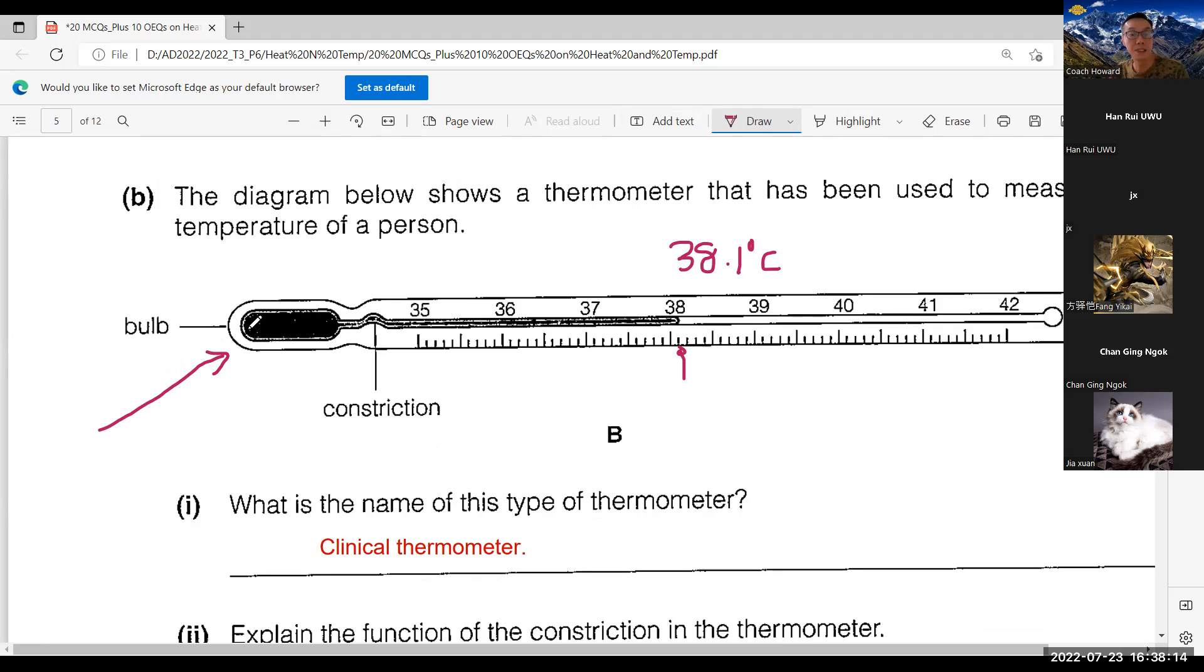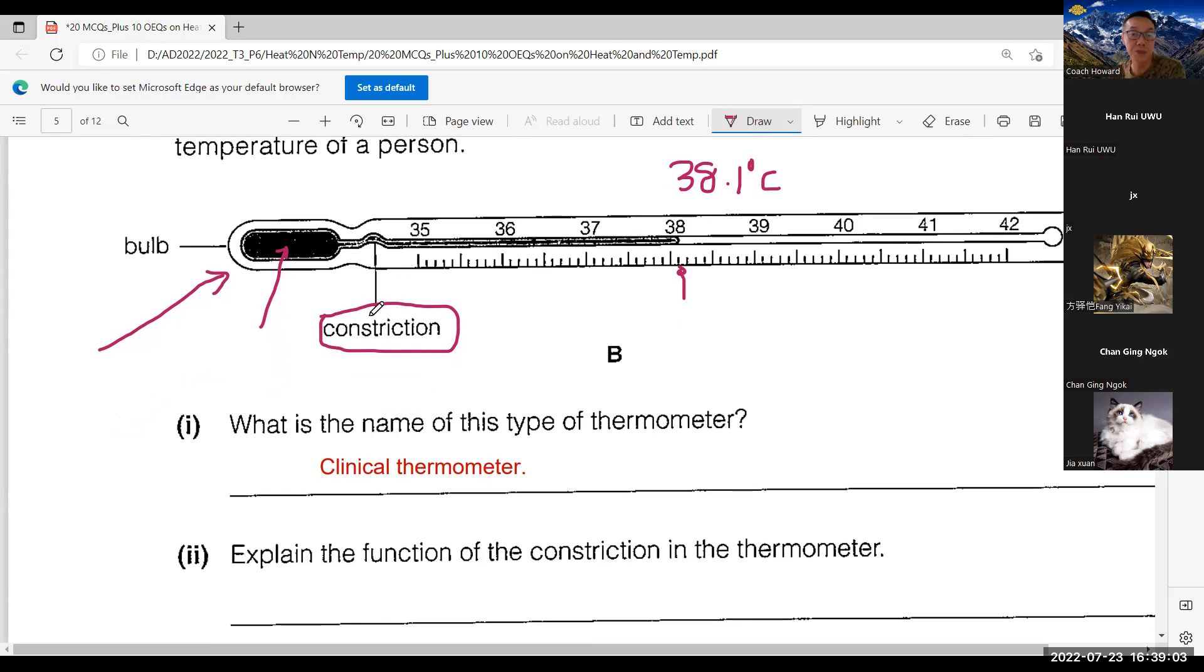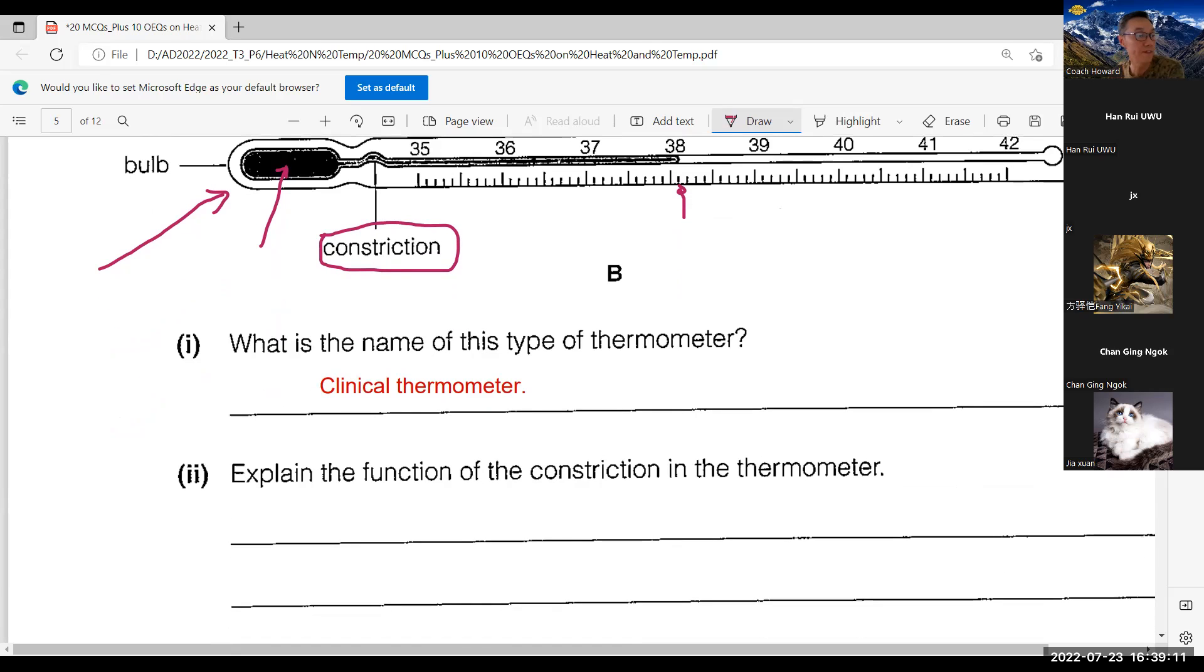When you put under your tongue for about one minute, the bulb actually will gain heat, causing this liquid inside, which is mercury, to expand. As it expands, it's forcing itself to a narrow tube, the capillary tube. It will stop at a point where it reaches the maximum temperature. Without this constriction, when you remove the thermometer from the patient's mouth, the temperature will drop immediately.